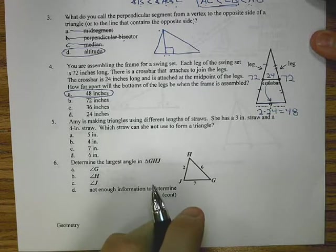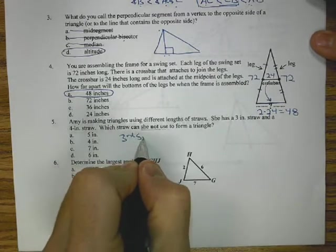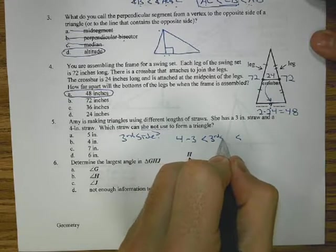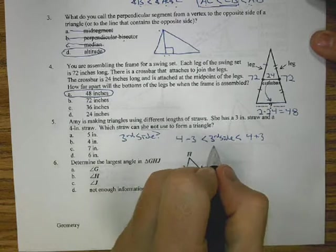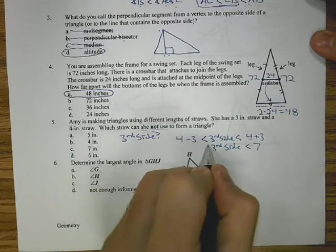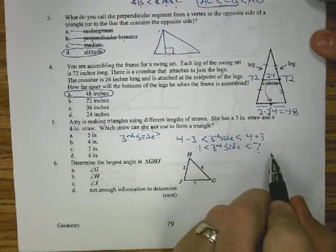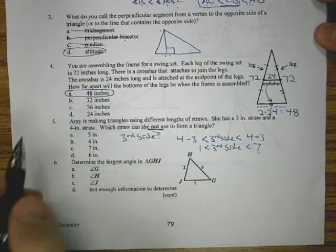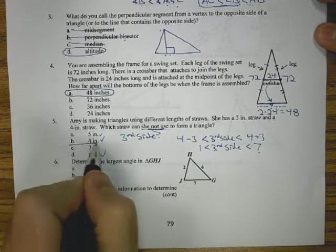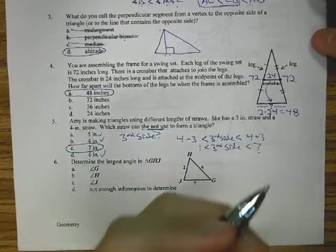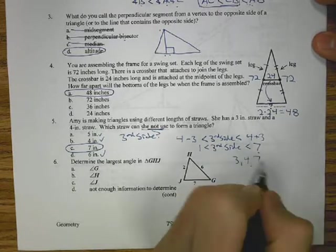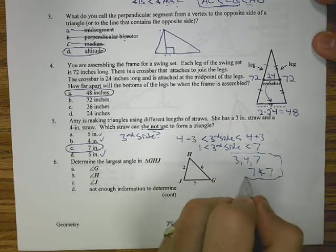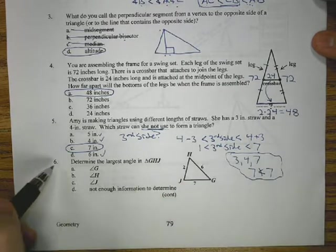Number five, Amy is making triangles using different length straws. She has a 3-inch straw and a 4-inch straw. For our third side, we need the difference between the two, 4 minus 3, and the sum between the two, 4 plus 3. So I know my third side is between 7 and 1. If I look at my possible answers, I'm looking for one which does not form a triangle. 5 is between them, 4 is between them, 6 is between them, 7 is not. We also have the other rule that the longest side has to be less than the sum of the other two. 7 is not less than 7.